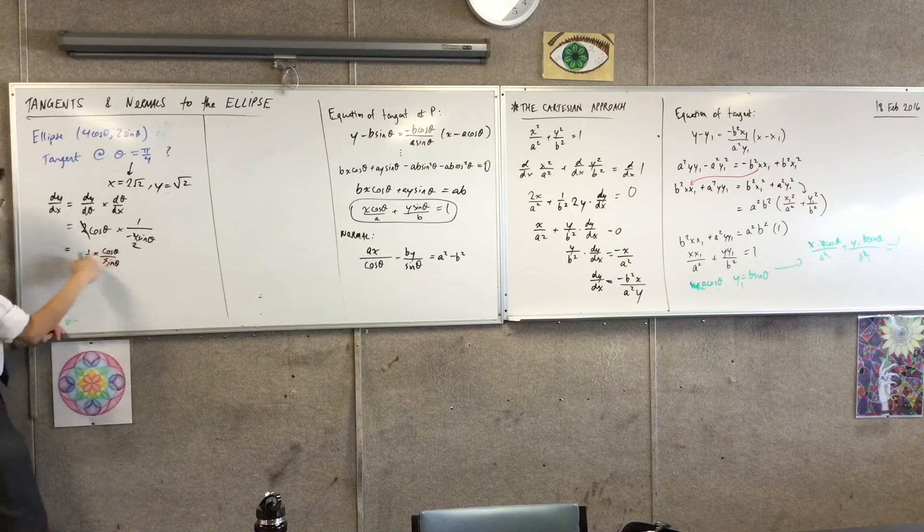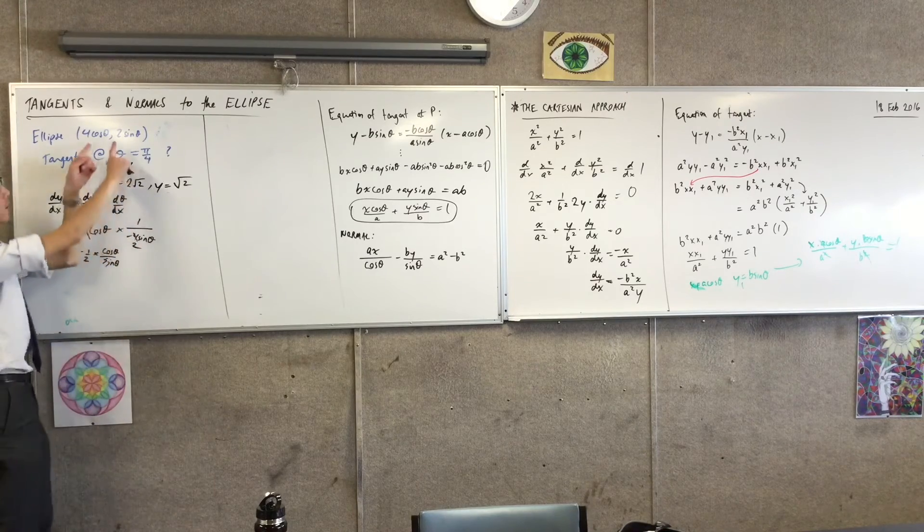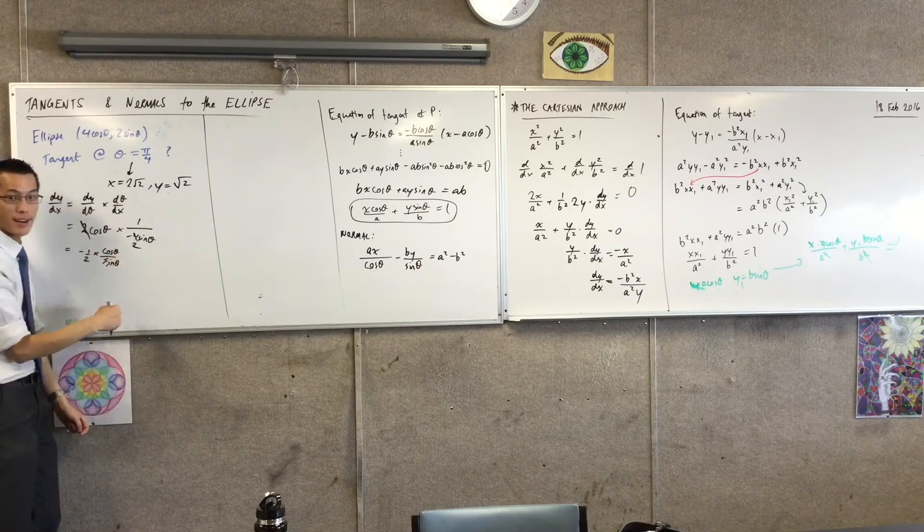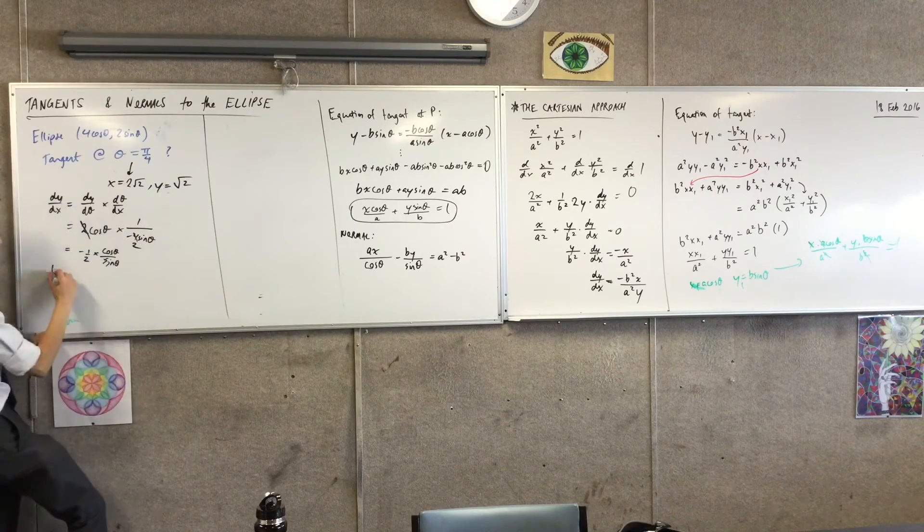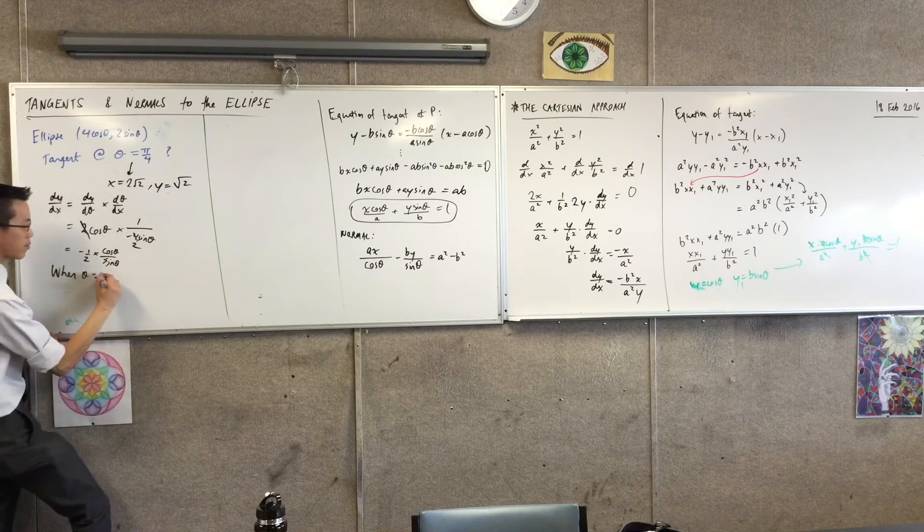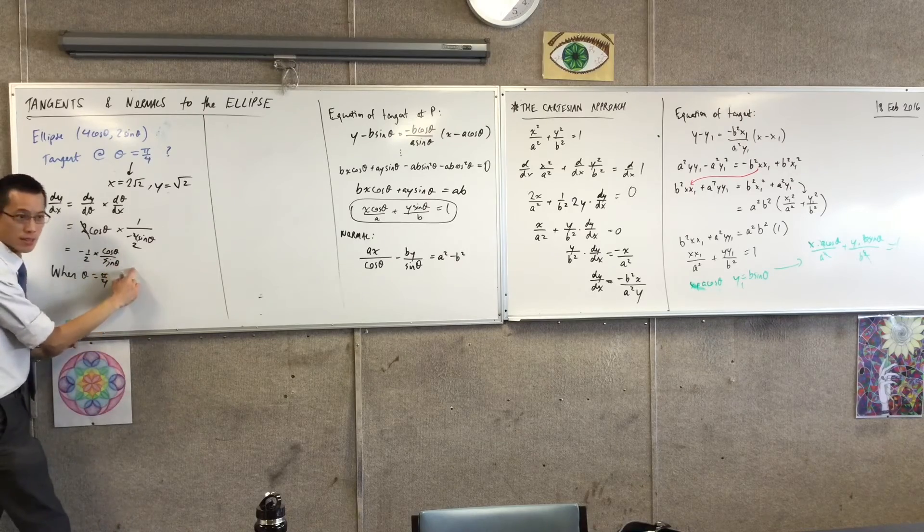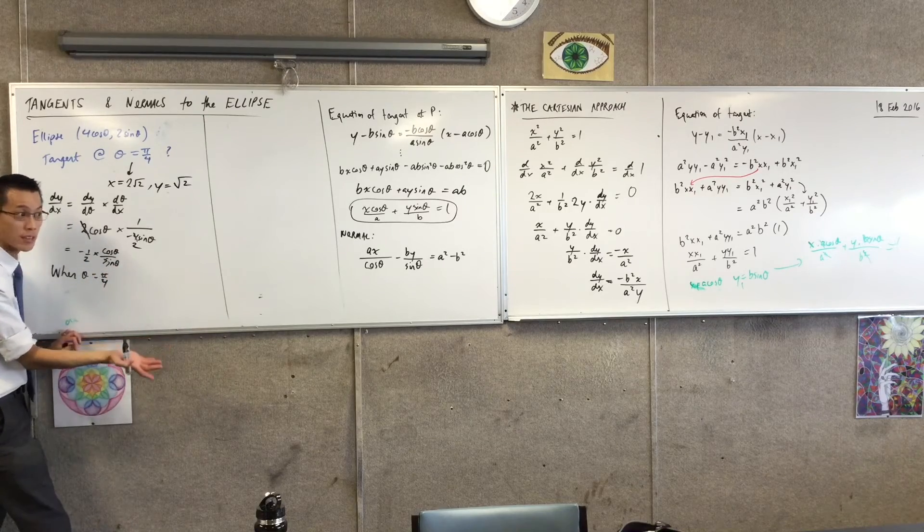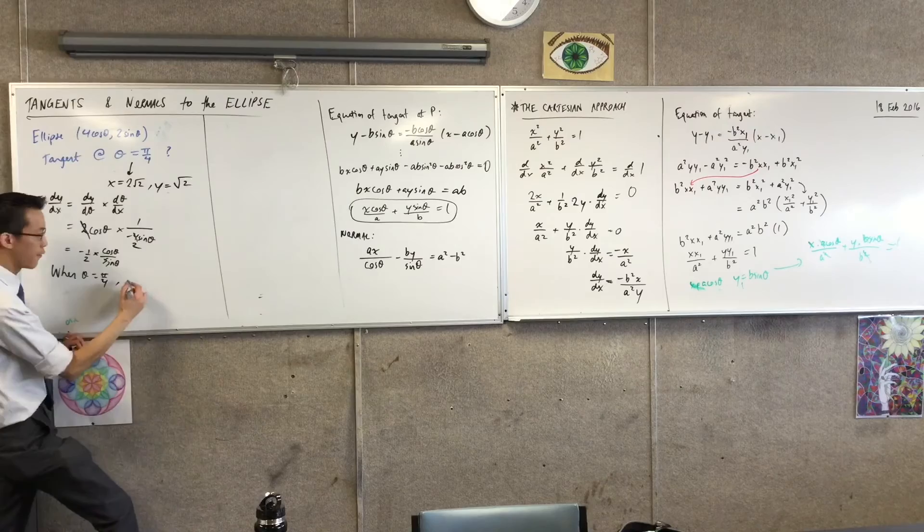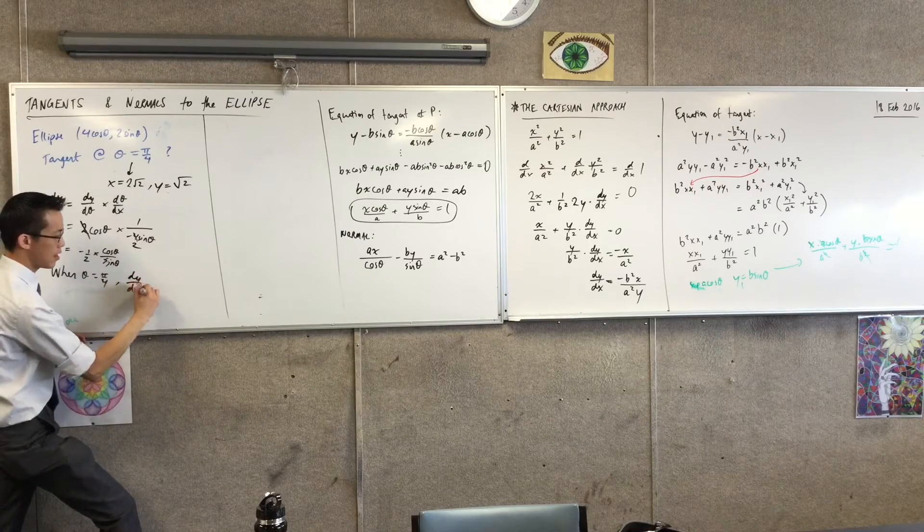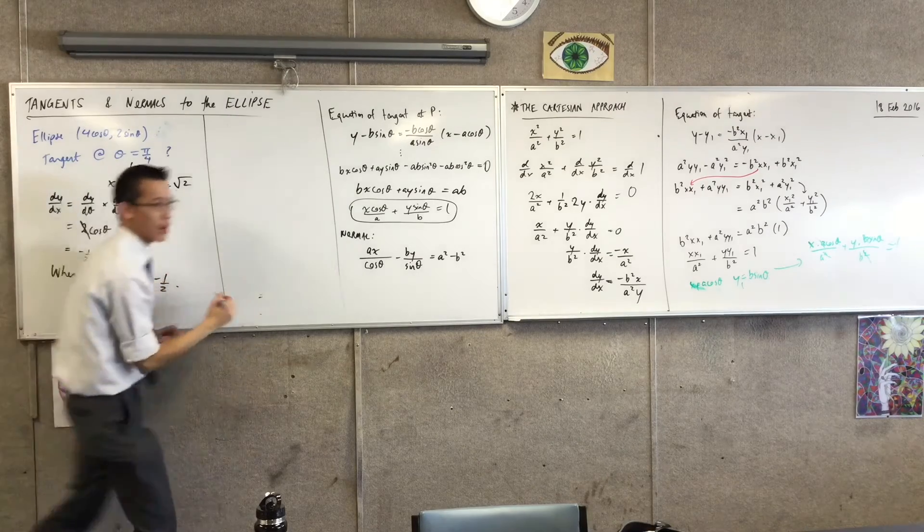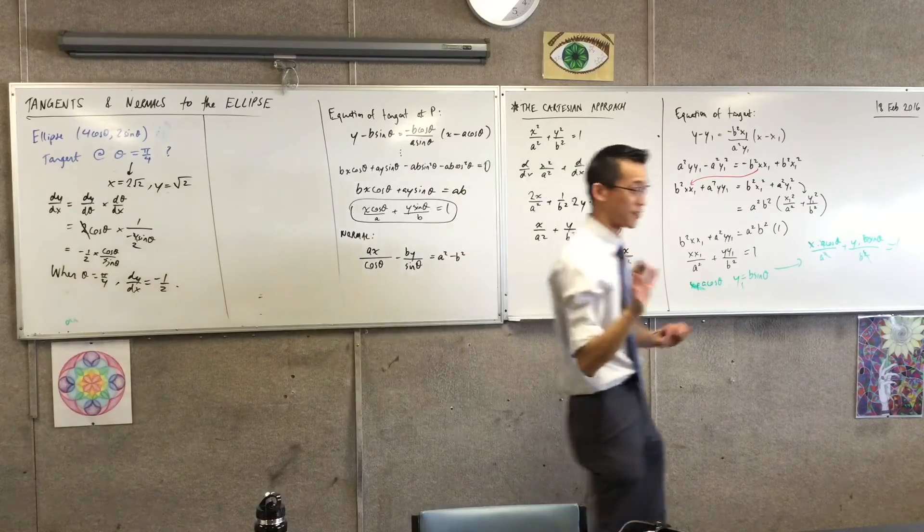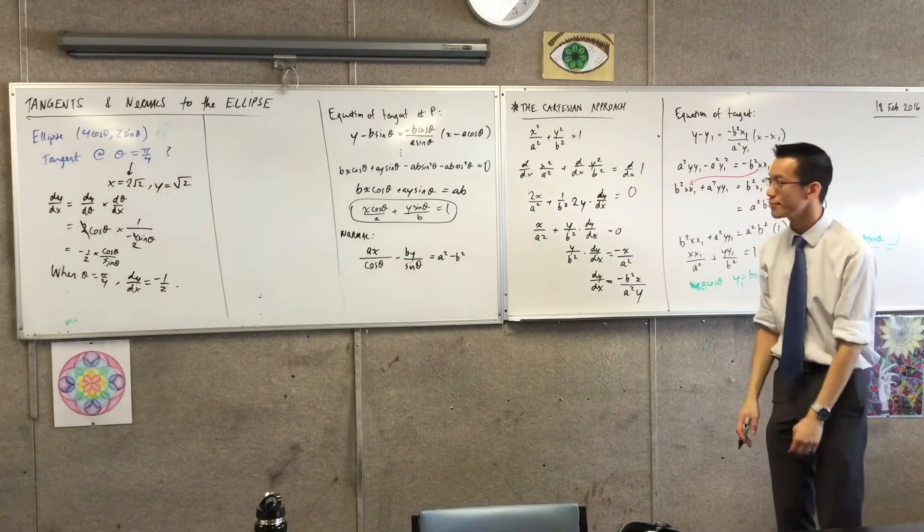The reason I didn't turn that to cot is because I've already worked out what cos and sine are. Conveniently, when theta equals π/4, cos and sine are exactly equal. So when theta equals π/4, the derivative is negative 1.